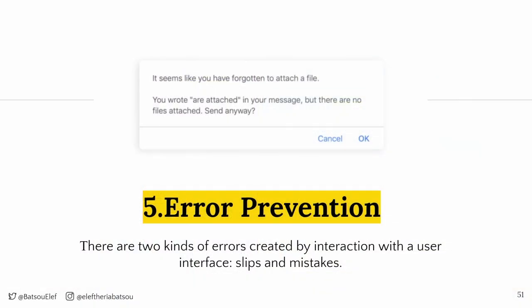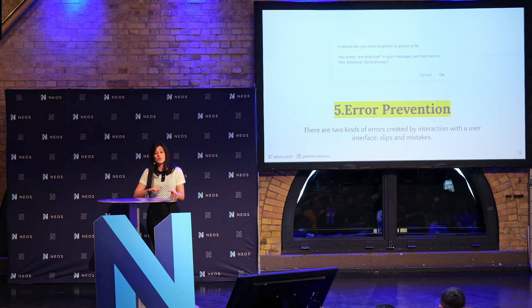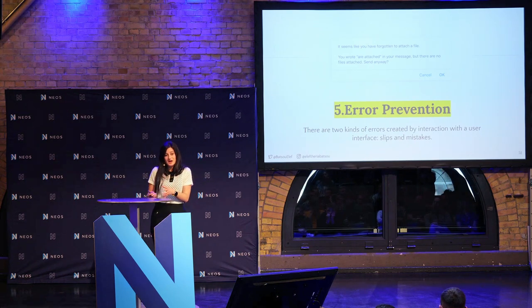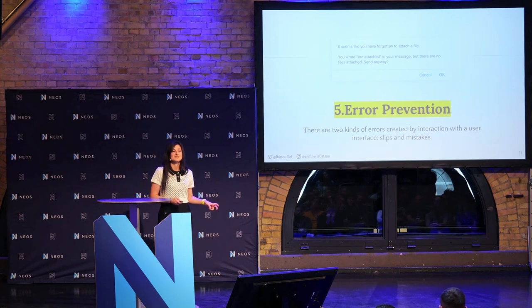The fifth rule is error prevention. We have two types of errors: slips and mistakes. Slips happen when users do something wrong because they are in a hurry or not paying attention — and that's okay, we have the emergency exit and they can go back and fix everything. But mistakes are more critical — the user is doing something wrong because they don't understand what they need to do, and that's not their problem. We should find that mistake and fix it. You will probably work with other developers, researchers, and users to find and fix it.